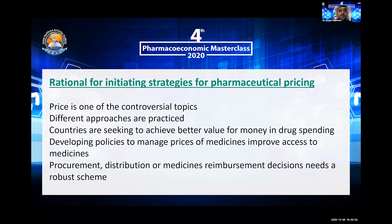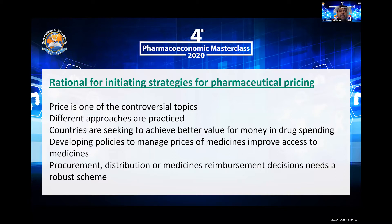There are different approaches for pharmaceutical pricing practiced in different countries. Basically, countries are seeking to achieve better value for money in drug spending. In order to achieve this, different regulators are developing policies to manage prices of medicines in different countries, to improve access to pharmaceutical products and to make sure medications are available to different people. There is always a need to have a robust scheme for pharmaceutical pricing, which can encourage better control of procurement, distribution, and medicine reimbursement decisions.